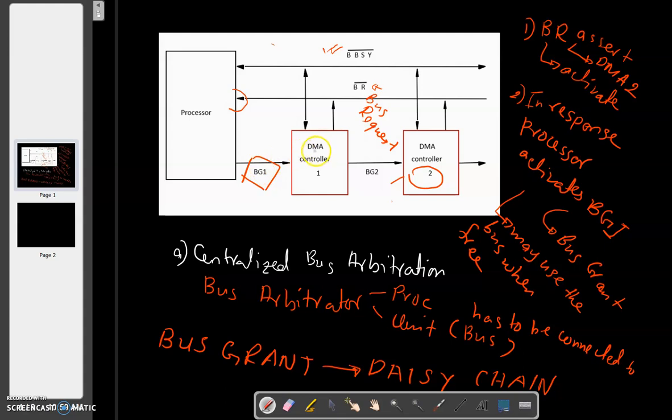BG1 comes to DMA Controller 1. Did DMA Controller 1 request? No. So the signal, it's still one signal, it goes to DMA Controller 2. Did DMA Controller 2 request? Yes, DMA Controller 2 requested.